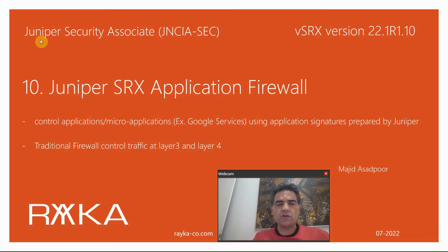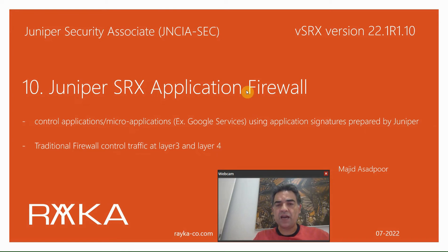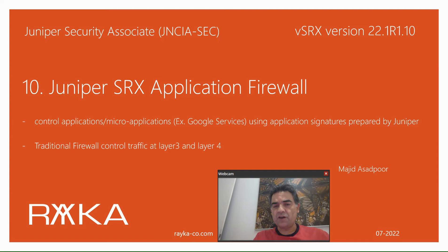Welcome to another video in the Juniper Security Associate course. In this section I will talk about the Juniper SRX application firewall. With a traditional firewall we could control traffic only at layer 3 and layer 4, but with the SRX application firewall we have the capability to control traffic at the application layer using application signatures prepared by Juniper. For example, it is possible to easily identify and control different Google services.